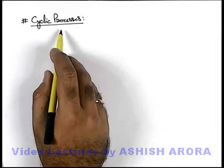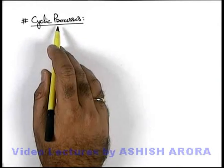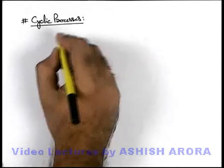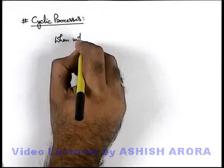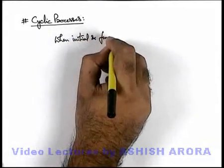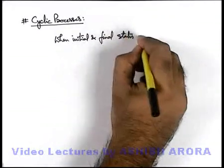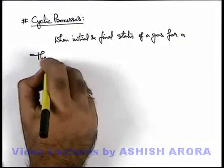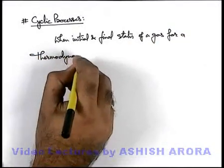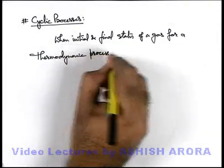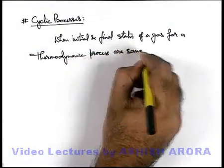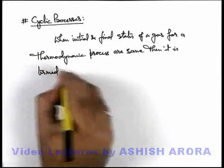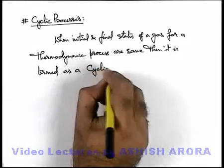Let's discuss cyclic processes. A cyclic process is one in which a gas starts from one state and finally comes back to the same state. When the initial and final state of a gas for a thermodynamic process are the same, then it is termed as a cyclic process.